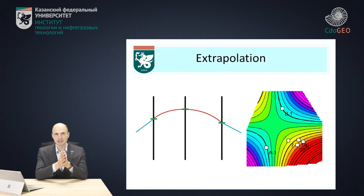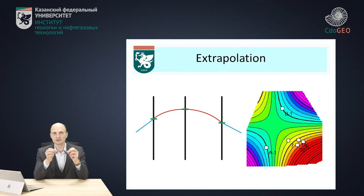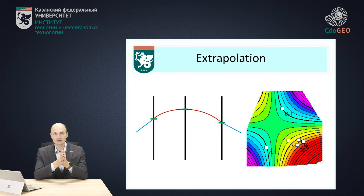In addition to interpolation, we have to talk about extrapolation. On the slide, this is shown by the blue part of the function. If interpolation is the finding of the function between the points, extrapolation is finding the values outside of the data set. In other words, it's a prediction of the function. Extrapolation is always less accurate than interpolation.